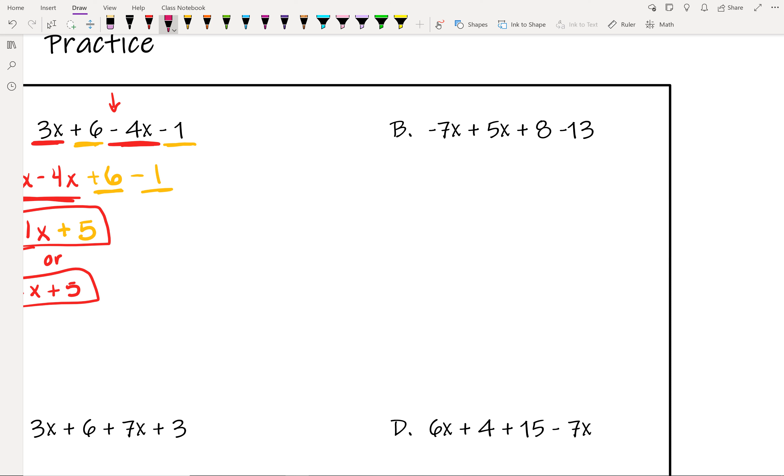Sometimes our terms could already be together. So here you'll see all of our like terms are together already. So we don't have to move anything around, but we can start combining. So over here we have negative 7x plus 5x. Negative 7 plus 5 is negative 2, so we have negative 2x. And we have 8 minus 13. 8 minus 13 is negative 5. There's nothing to change about this, so this is our answer here.